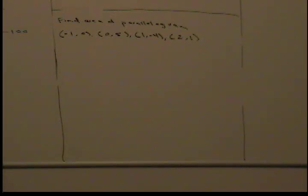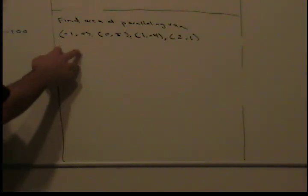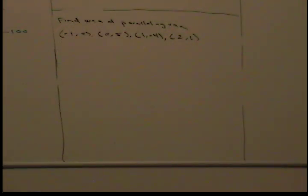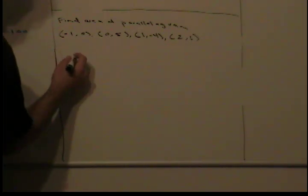So, what we have to do in order to translate it to the origin is we have to subtract each one of these vertices by (-1, 0). So, let's go ahead and do that.